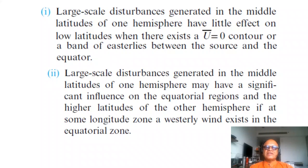Large scale disturbances generated in the middle latitudes of one hemisphere have little effect on low latitudes when there exists an easterly basic state, or a band of easterlies between the source and the equator, source of the perturbation and the equator.